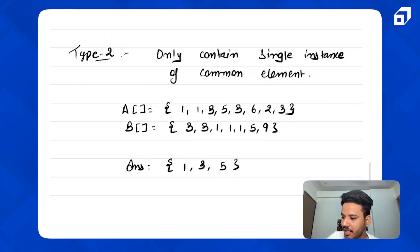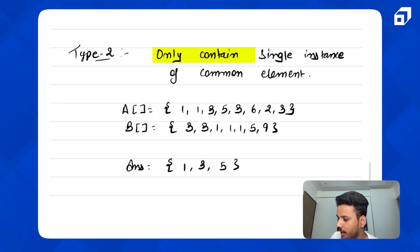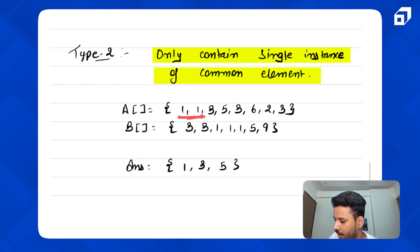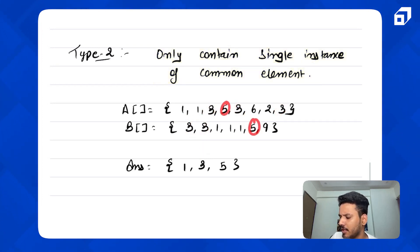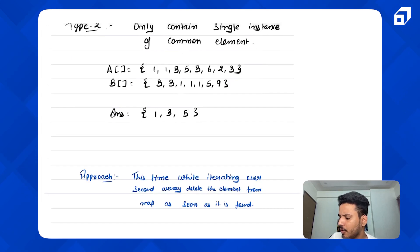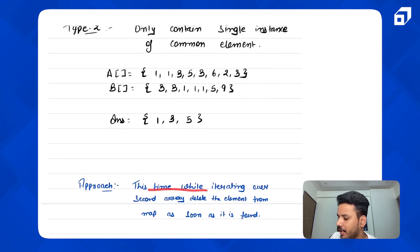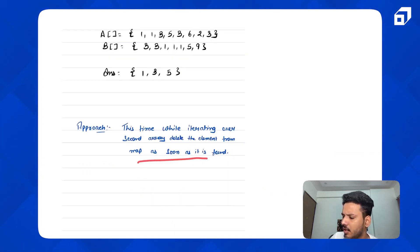There is another variety of the same problem with a small change: Type 2, where we have to return only a single instance of each common element. For example, if one appears twice in A and three times in B, we still return it only once. Similarly, if three appears three times in A and twice in B, we return it once. What we do this time: while iterating the second array, we delete the element from the map as soon as it is found.